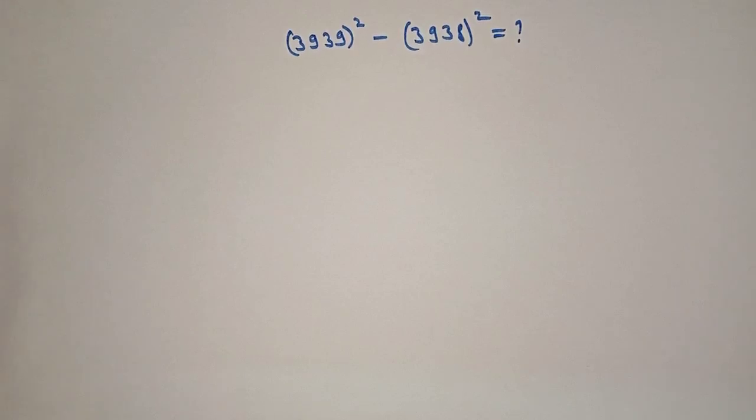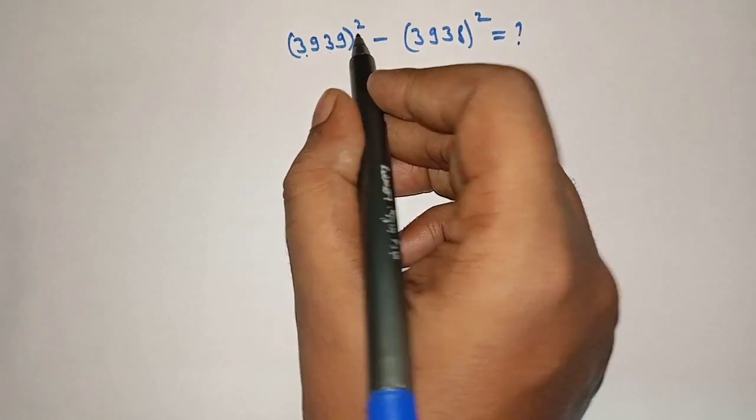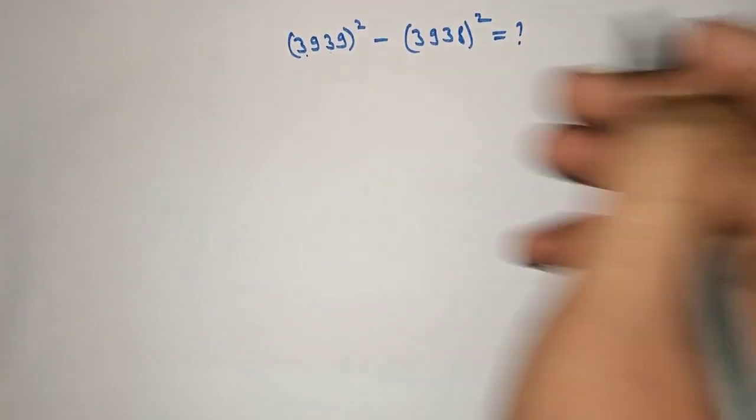Hello friends, welcome to AHA math. 3939 the whole square minus 3938 the whole square equal to what?